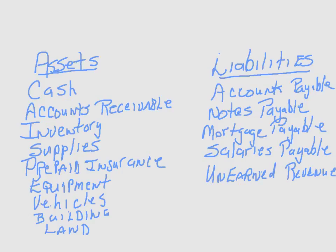A mortgage payable: when a business buys a building and borrows money to do so, that money is usually provided by a mortgage company — it is a loan against the business. A bank loan is a loan taken out short term, one to three years, for example to buy a vehicle. A mortgage would be something like 10 to 20 years. A bank loan would be one to three years. Notes payable would be months. Accounts payable — one month, paid at the end of each month.